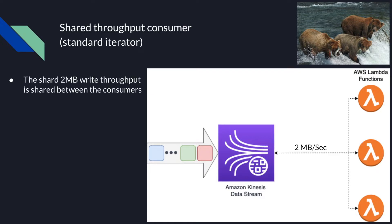In this type of consumer, the 2 MB are shared between all the consumers attached to the stream. So if you would want to have more than the recommended 2–3 consumers, you may face a situation where the data is being written to the stream faster than it can be read.